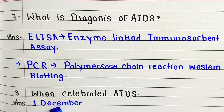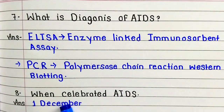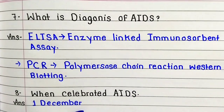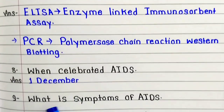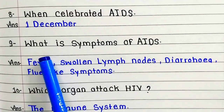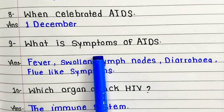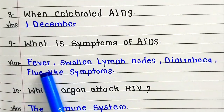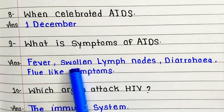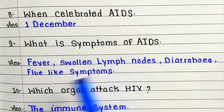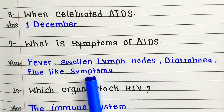Question number eight: when is AIDS Day celebrated? Answer: 1 December. Question number five: what are the symptoms of AIDS? Fever, swollen lymph nodes, diarrhea, flu-like symptoms.